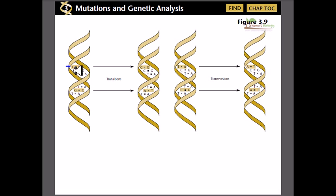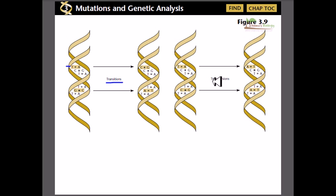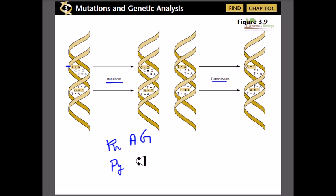We have an arrangement of nucleotides where T always pairs with A and C with G. If any change in this nucleotide or base pairing happens, that will be called a transition or transversion point mutation. There are two different types of bases in DNA: purine bases and pyrimidine bases. The purine bases are adenine and guanine, and the pyrimidine bases are thymine and cytosine. Adenine pairs with thymine and guanine pairs with cytosine — this is the basic rule.